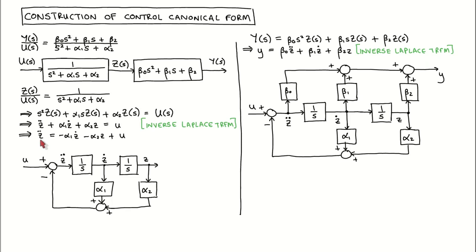We now draw the corresponding block diagram. We have a second order system, so we draw two integrators and connect them together. We label the output of the right integrator as z, which means the input is z-dot and the input of the left integrator is z-double-dot. We then implement the equation: z-double-dot equals minus alpha-1 times z-dot, minus alpha-2 times z, plus u.